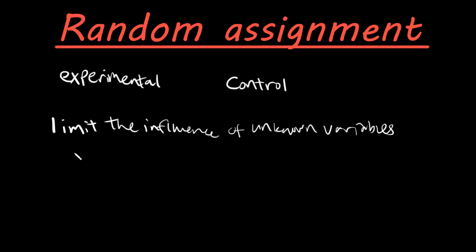To sum it all up, random assignment just means that we're going to randomize the process of putting people in an experimental group and a control group. That way both those groups are similar at the start and we can compare the differences at the end when testing our variables. Random assignment allows us to limit the influence of these unknown variables to give us a more accurate result for our experiment.